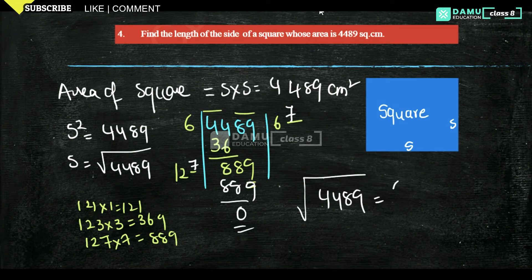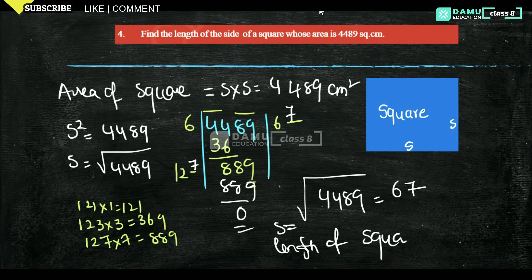Therefore, the square root of 4489 is 67. So the length of the side of the square is s = 67 centimeters.